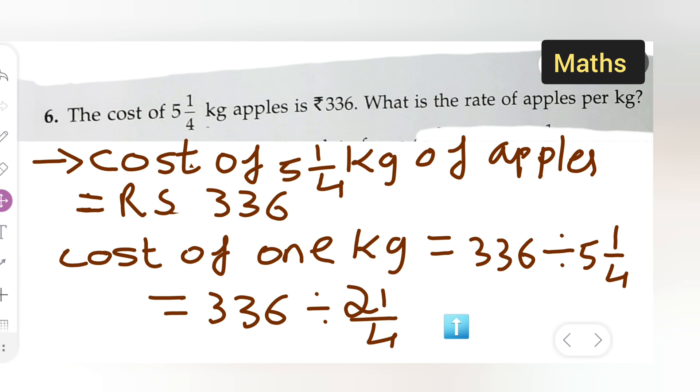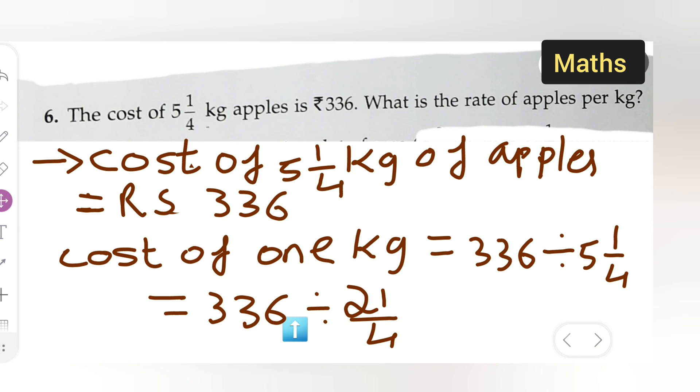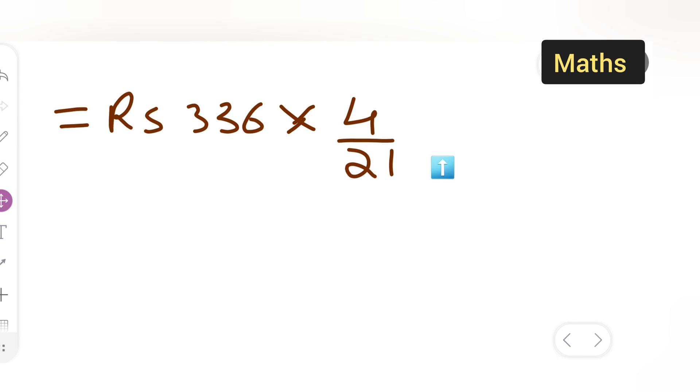Continuation: rupees 336, now I have to divide this. Rupees 336 multiply by 4 upon 21. So I am dividing this by 21 upon 4. When we are dividing, it will be reciprocal of this, so multiply by 4 upon 21. You have to make reciprocal.